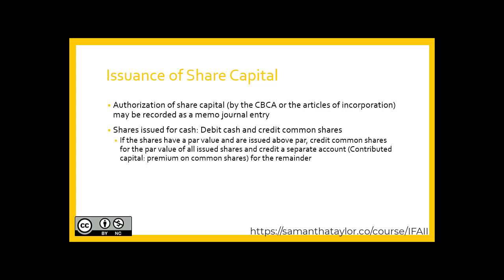Shares are issued for cash, and there would be a journal entry for the issuance of cash. So a memo journal entry for the authorization of share capital, but when shares are actually issued and somebody purchases them for cash, we would debit the cash and credit the common shares.